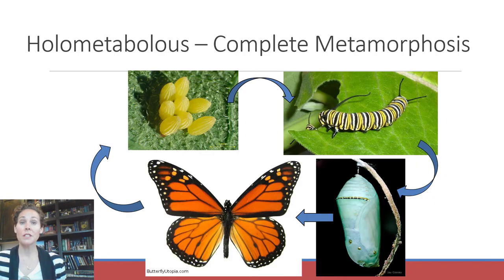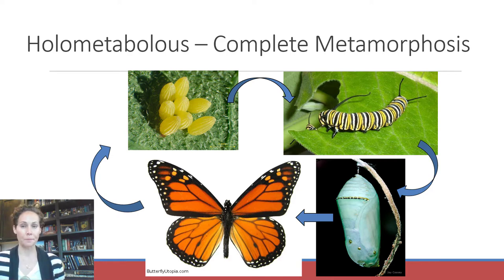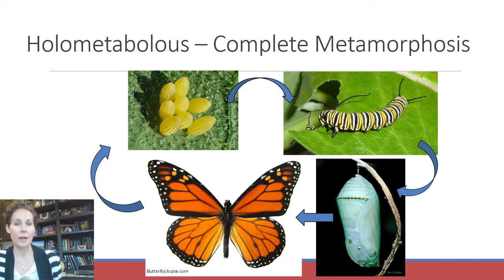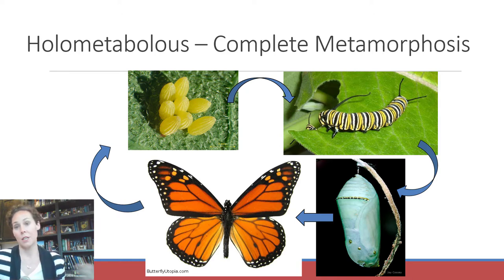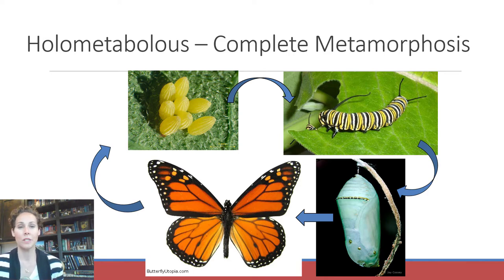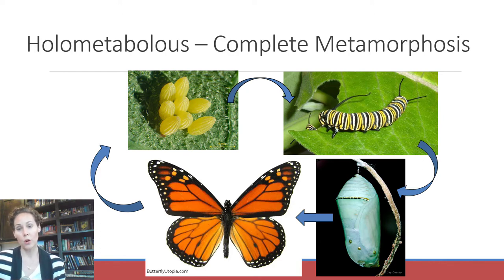Let's look at the different types of metamorphosis and life cycles that insects have. Complete metamorphosis, or a complete life cycle, is also called holometabolous — that's how I remember it, the 'whole' thing. These are the insects most of us studied in school when learning about insect life stages. They have a larva and a pupa stage, for four total stages.